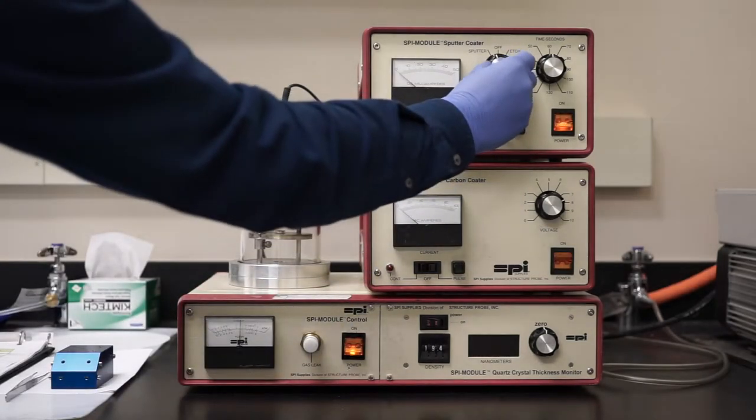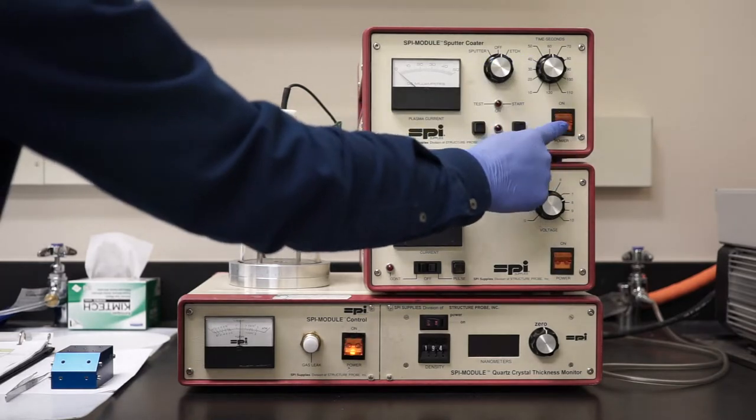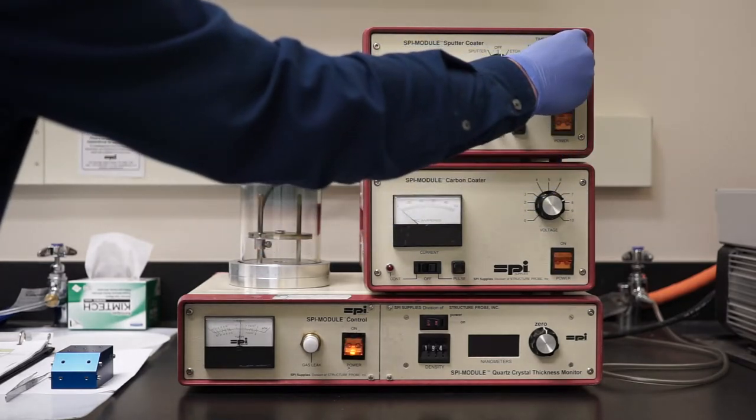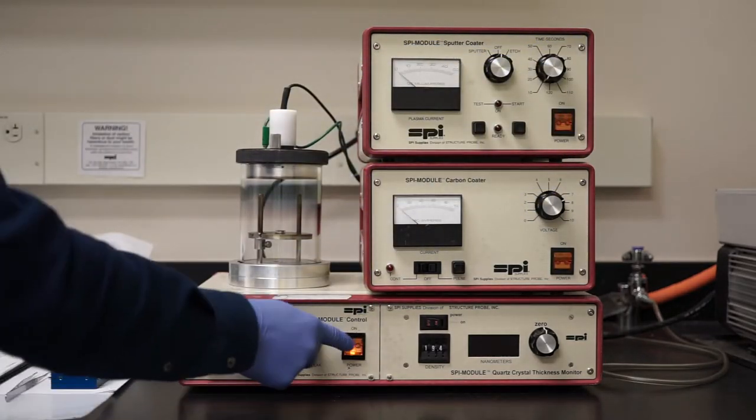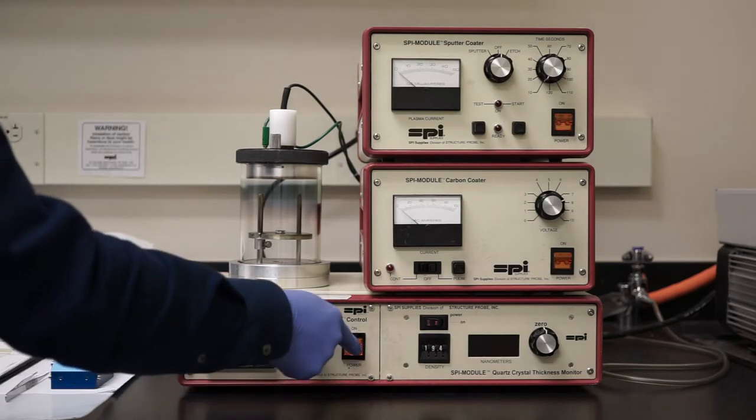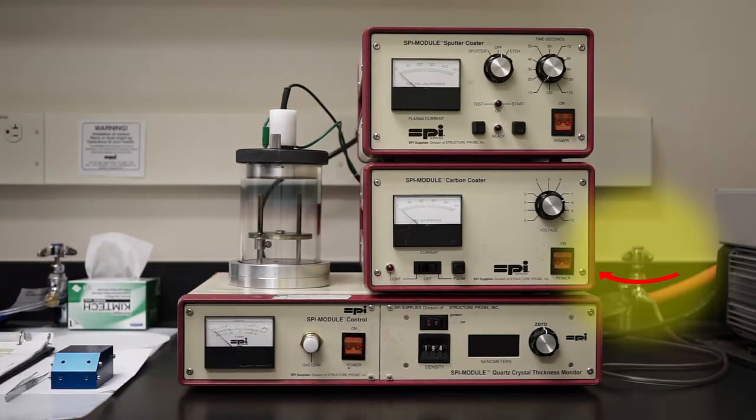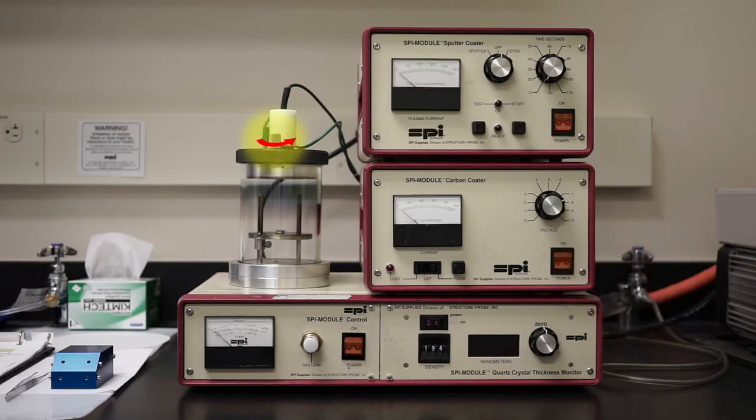When it's finished, turn the knob from sputter to off. Turn off the power and reset the time to 10 seconds. Close the gas leak valve and power off the control unit. Close the argon gas valve, loosen the vent knob, and remove the sputter head, the chamber, and your sample.